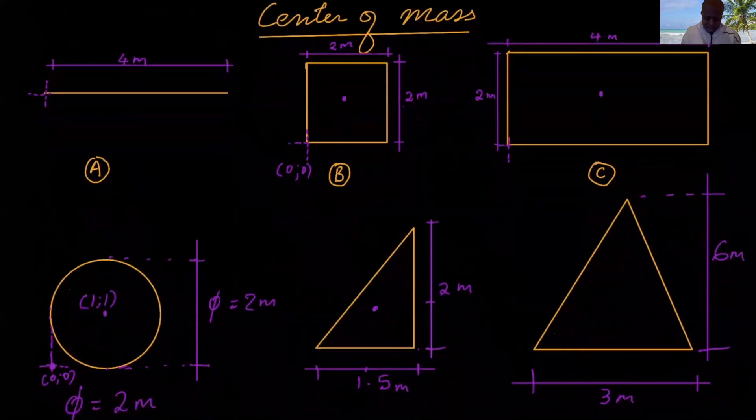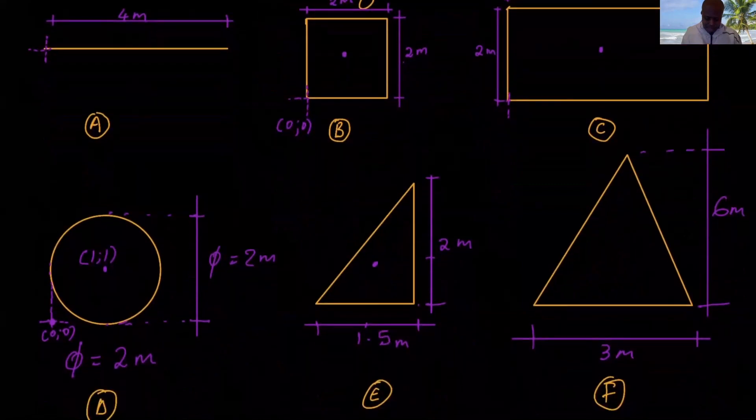I've got six objects here: object A, B, C, D, E, and F.